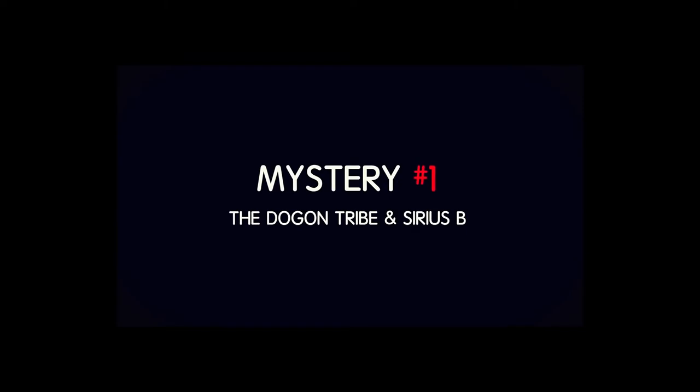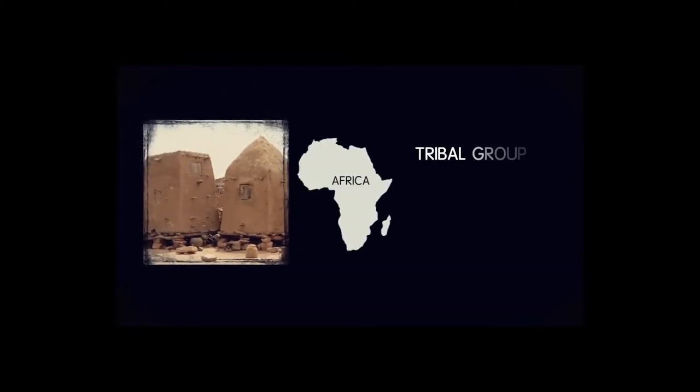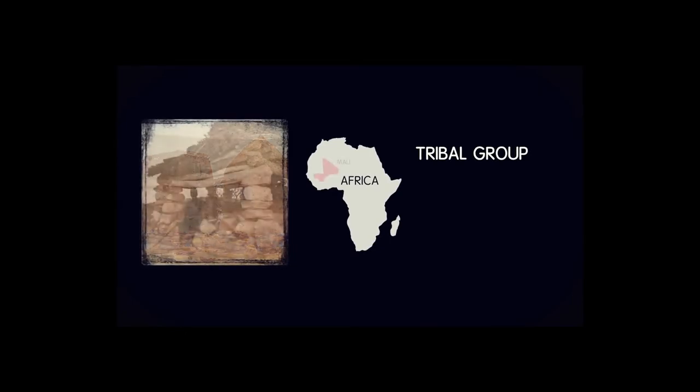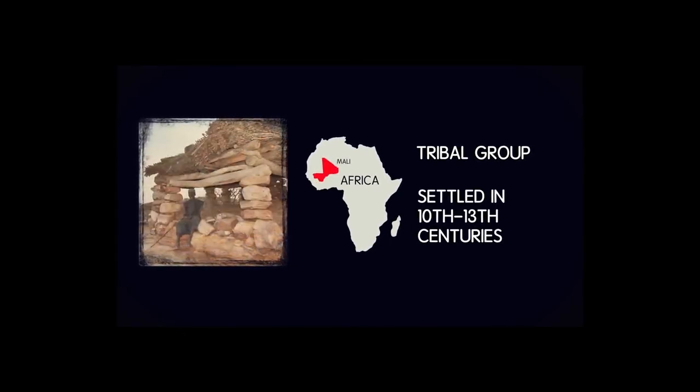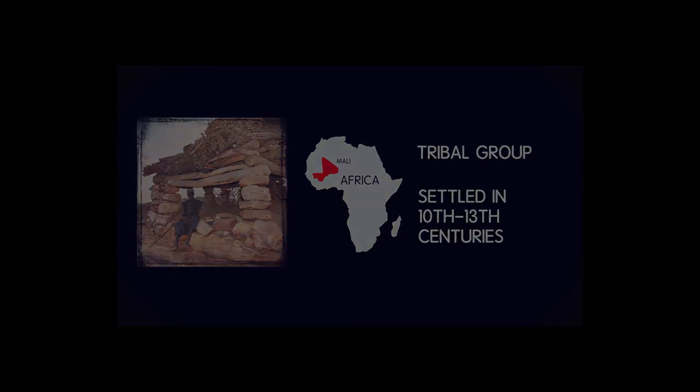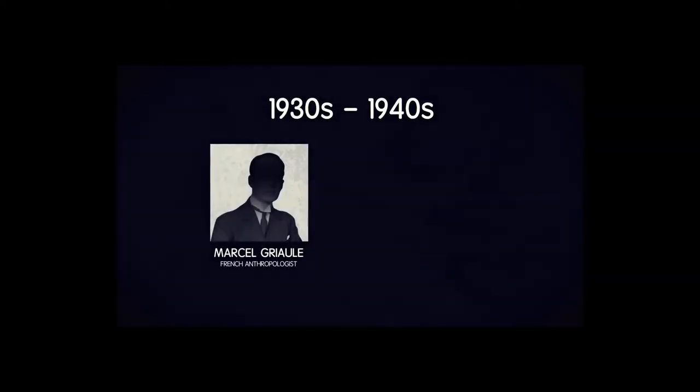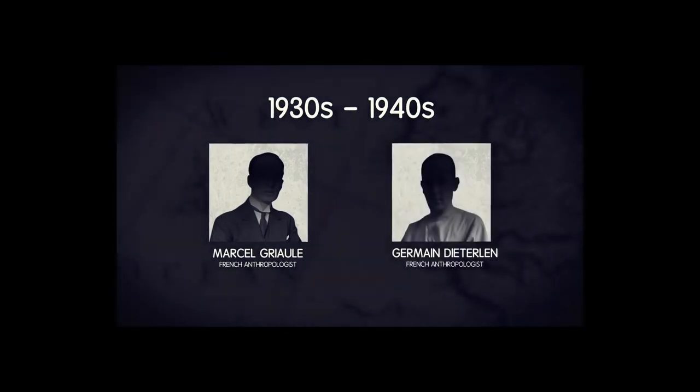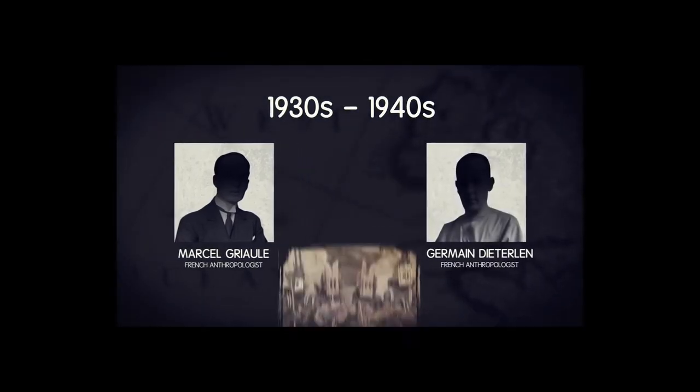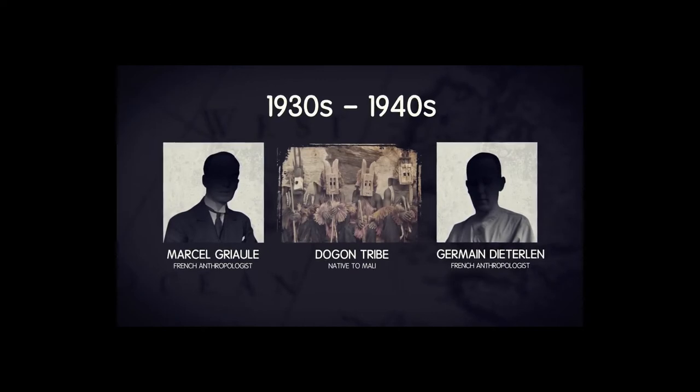The first mystery we'll discuss is the Dogon and Sirius B. The Dogon are a tribal group in West Africa, south of Timbuktu in the Republic of Mali that settled sometime between the 10th and 13th centuries. In the 1930s and 1940s, the studies of French anthropologists Marcel Griot and Jermaine Deterlin revealed that the Dogon knew a surprising amount of modern astronomy.